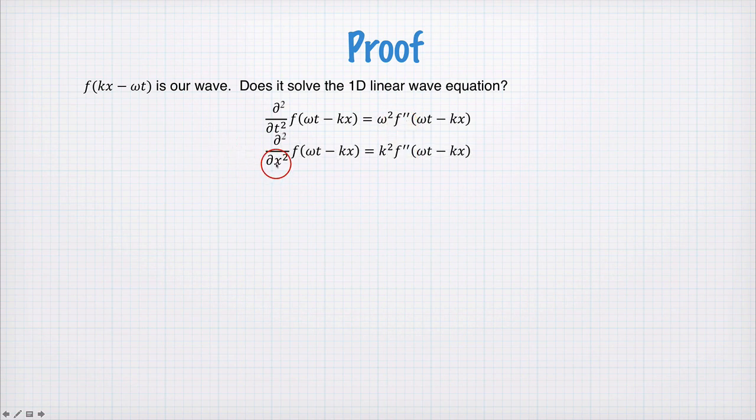When we take a second spatial derivative, we get a factor of negative k squared out the front, so k squared, and a second derivative with respect to space.